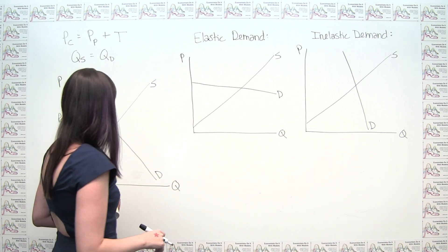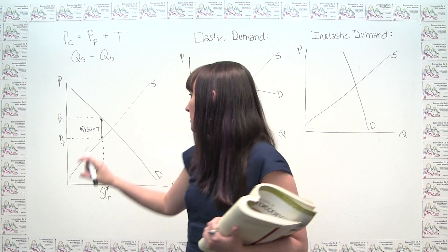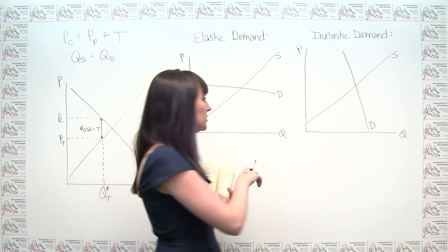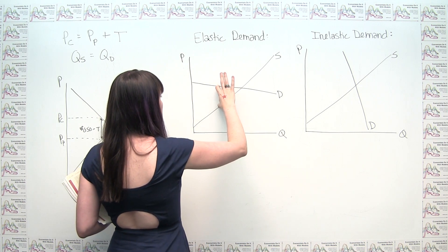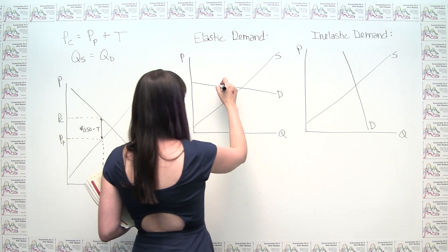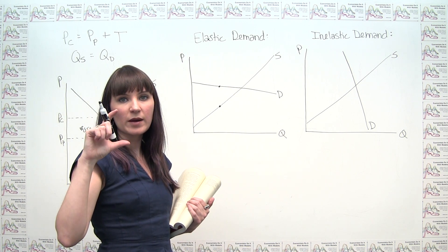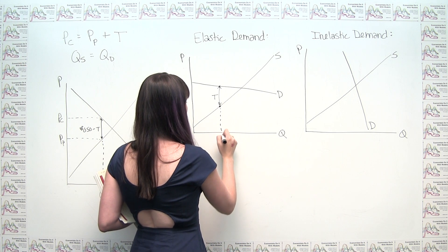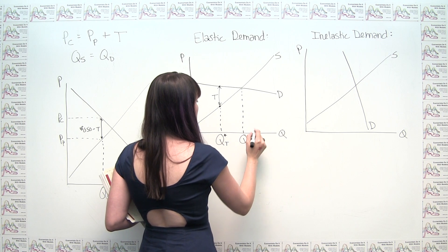We want to put an equivalent tax on both markets to see what happens. Let's say the tax is about the same 50 cent amount. For the elastic demand diagram, the equilibrium with the tax has to be where there's a spread between the consumer's price and the producer's price equal to the amount of the tax. We can then label the equilibrium quantity with the tax and the equilibrium quantity without the tax.